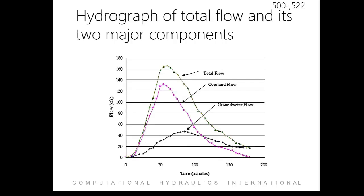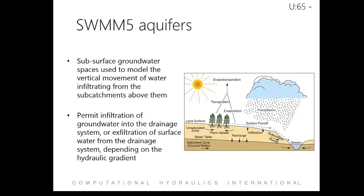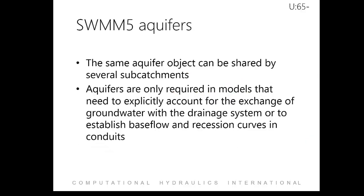One thing to keep in mind is that groundwater flow can be a significant volume and can be routed to any previously defined inlet node, trapezoidal channel, or pipe, allowing isolation of the various components of the total hydrograph. Aquifers are subsurface groundwater areas used to model the vertical movement of water infiltrating from the subcatchment. They also permit infiltration of groundwater into the drainage system or exfiltration of surface water from the drainage system, depending on the hydraulic gradient that exists. The same aquifer object can be used by several subcatchments and are only required in models that need to explicitly account for the exchange of groundwater with the drainage system or establish baseflow and recession curves in conduits.